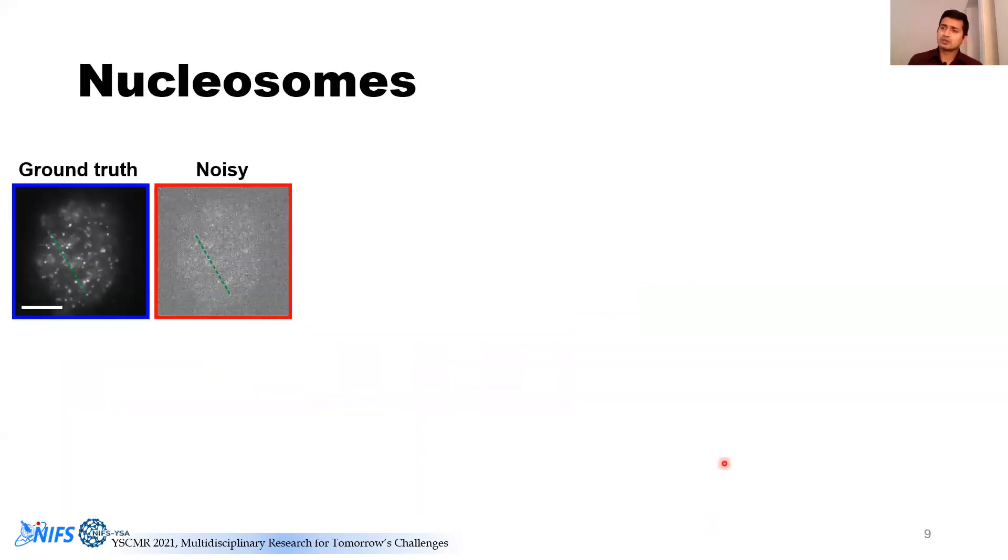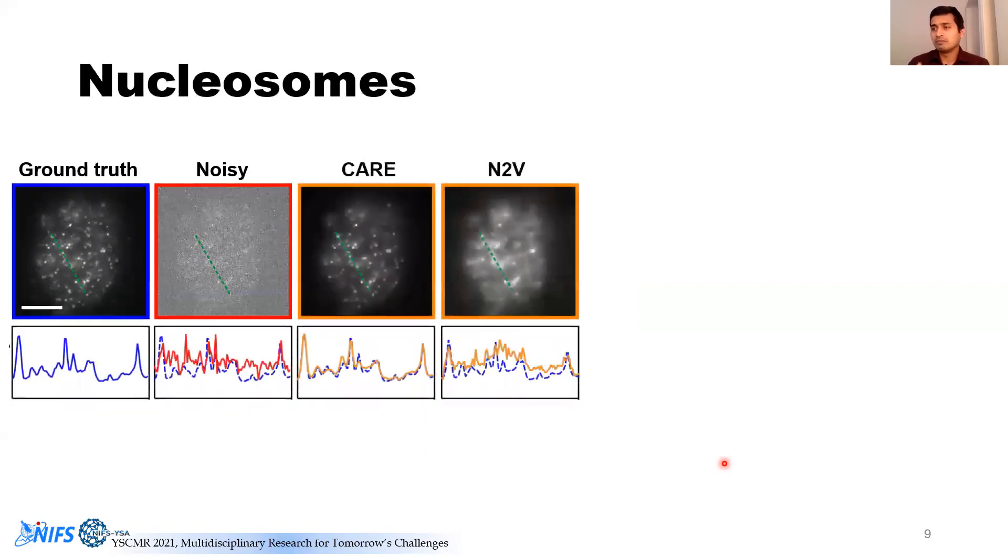If you look at the nucleosomes, this is tricky because you're dealing with real data. When you compare the statics of it, same images without any movement, CARE had done better. Therefore, we had to disregard N2V in our analysis.